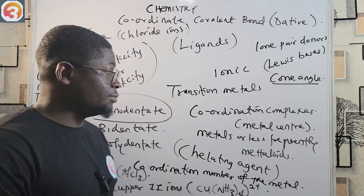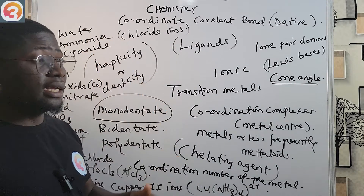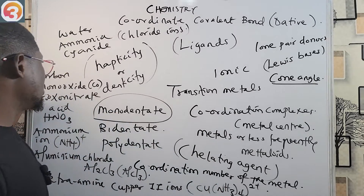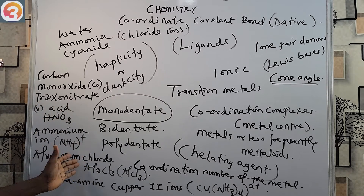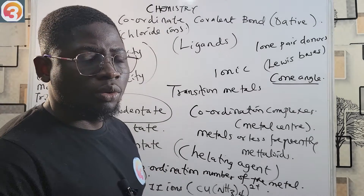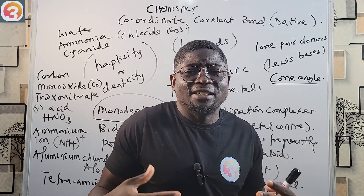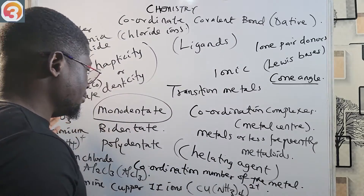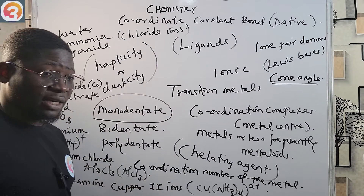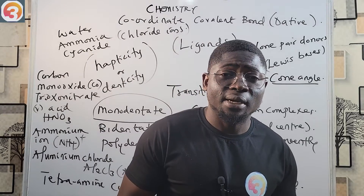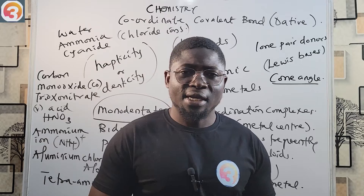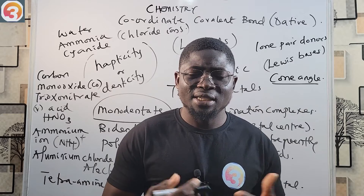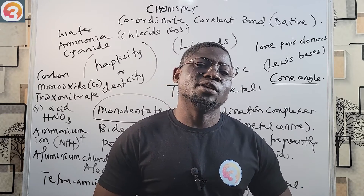We've seen simple ligands such as water and ammonia, and looked at examples of dative species such as carbon monoxide, ammonium, aluminum chloride. You should know which species favor dative bonding so that when you see a compound in an exam, you can quickly identify it and pick your answer and move to the next question.